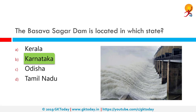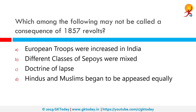The Basava Sagar Dam is located in which state? The correct answer is Karnataka. The Basava Sagar Dam has been built across the Krishna River at Siddapur village in Vijayapur district of Karnataka. The reservoir impounds Basava Sagar, with a total storage capacity of 37.965 TMCft. The full reservoir level is 492.25 meters, and the dam is 29 meters high and over 10 kilometers long with 30 gates for water release.